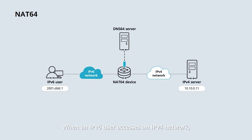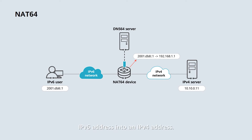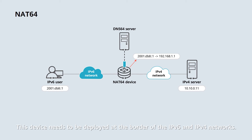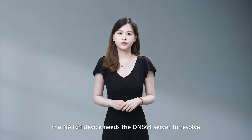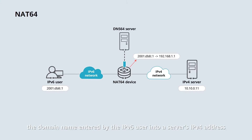When an IPv6 user accesses an IPv4 network, a NAT64 device needs to translate the user's IPv6 address into an IPv4 address. This device needs to be deployed at the border of the IPv6 and IPv4 networks. Before address translation, the NAT64 device needs the DNS64 server to resolve the domain name entered by the IPv6 user into a server's IPv4 address, and to send the address information to the IPv6 user.